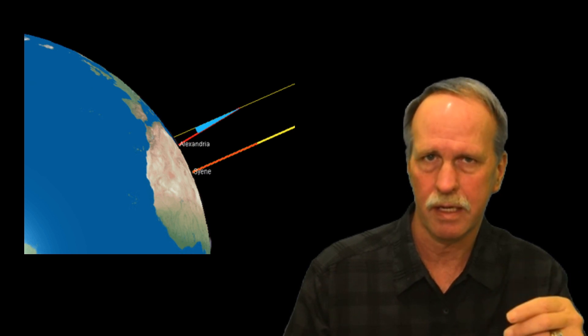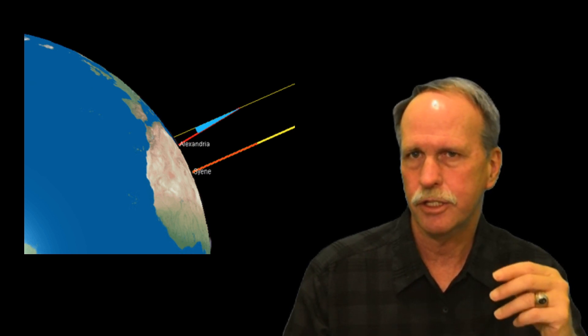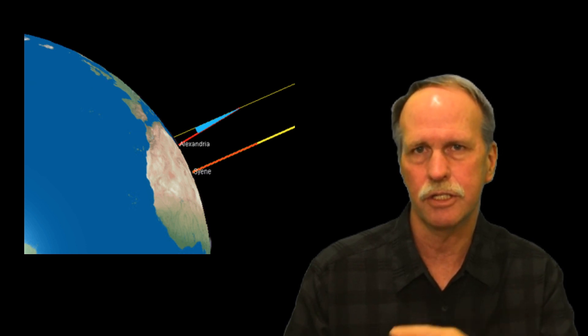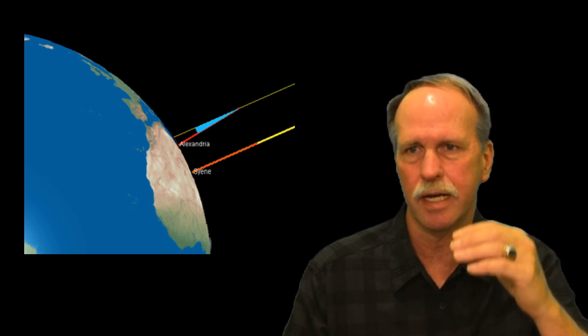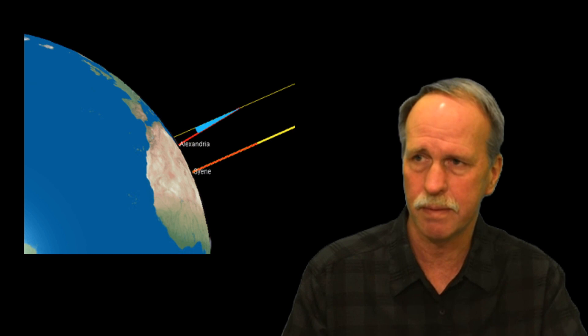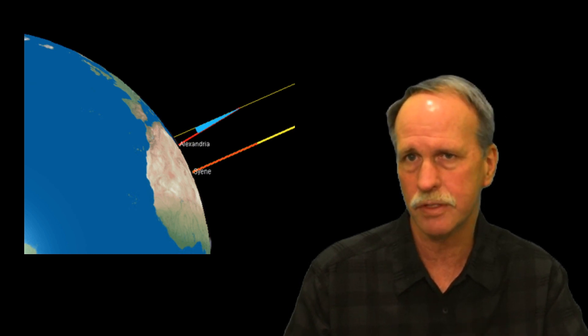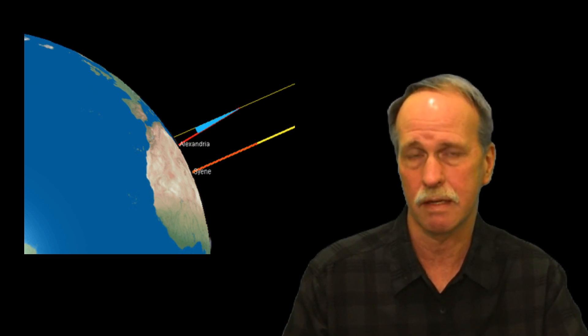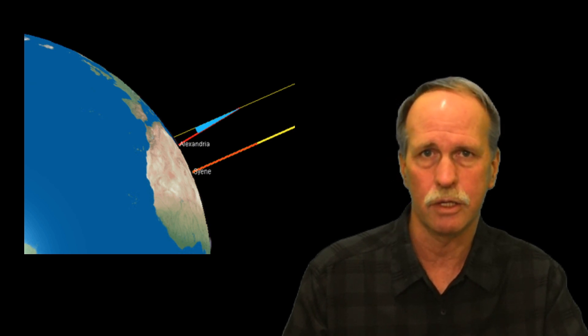What he did was he looked at Cyrene, which is Aswan now, which is located on the Tropic of Cancer. On June 21st, on the Tropic of Cancer, the sun is directly overhead and would shine down to the bottom of a long well in Cyrene. At the same time, he measured the shadow in Alexandria, 500 miles away. That came out to be 7 degrees, and from that, he calculated the circumference of the Earth to be approximately 25,000 miles. It's 24,901 miles. He did a pretty good job with it.